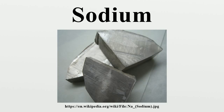Occurrence: 23Na is created in the carbon burning process in stars by fusing two carbon atoms together. This requires temperatures above 600 mega-Kelvins and a star of at least three solar masses. The Earth's crust contains 2.6% sodium by weight, making it the sixth most abundant element on Earth. Sodium's estimated crustal abundance is 2.36 × 10⁴ mg/kg, and its estimated oceanic abundance is 1.08 × 10⁴ mg/L.